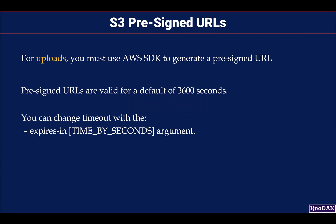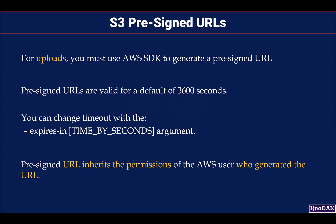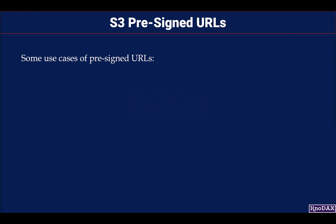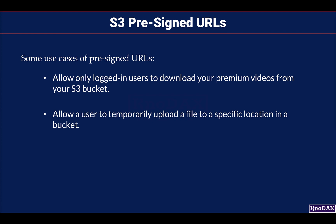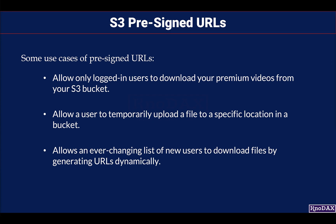Users who are provided a pre-signed URL inherit the permissions of the AWS user who generated the URL. Use cases include: allowing only logged-in users to download premium videos from your S3 bucket, allowing a user to temporarily upload a file to a specific location in a bucket, and allowing an ever-changing list of new users to download files by generating URLs dynamically.